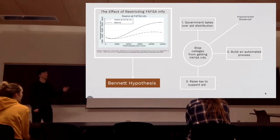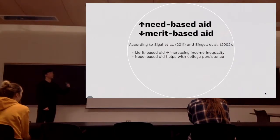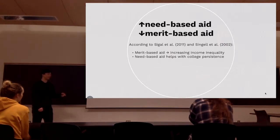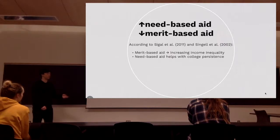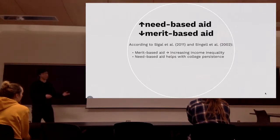One concern people may have about our proposal is that if we focus on helping richer students benefit, how will we deal with impoverished students? Our research has shown that we need to increase need-based aid compensation while decreasing merit-based aid, or even eliminating it, because researchers have shown that merit-based aid tends to increase income inequality, which is contrary to the original goal of federal aid. Additionally, need-based aid is shown to be much more effective when it comes to increasing the college persistence of an impoverished student.